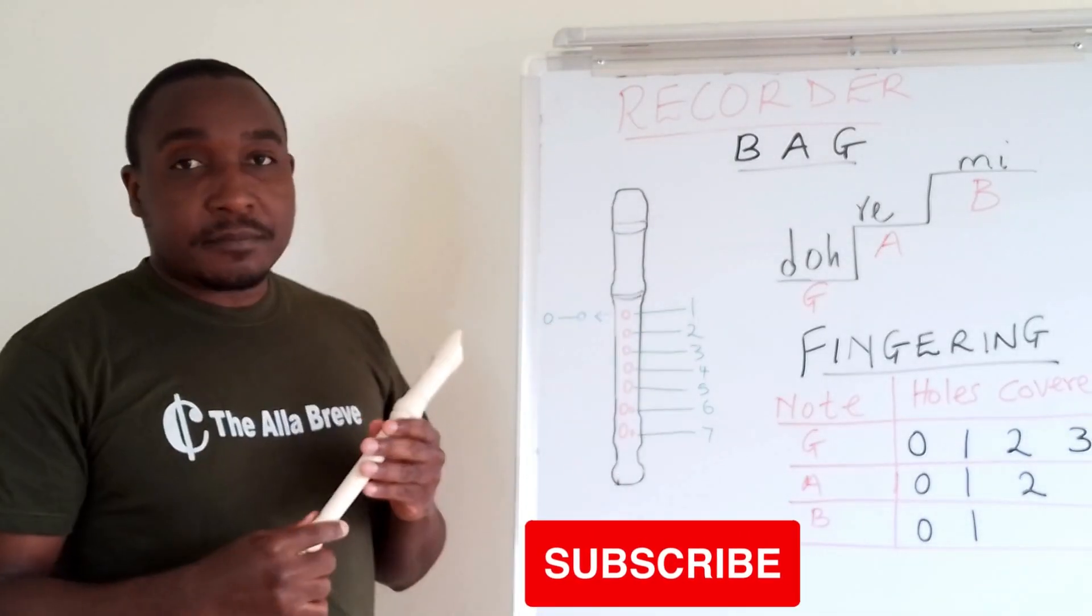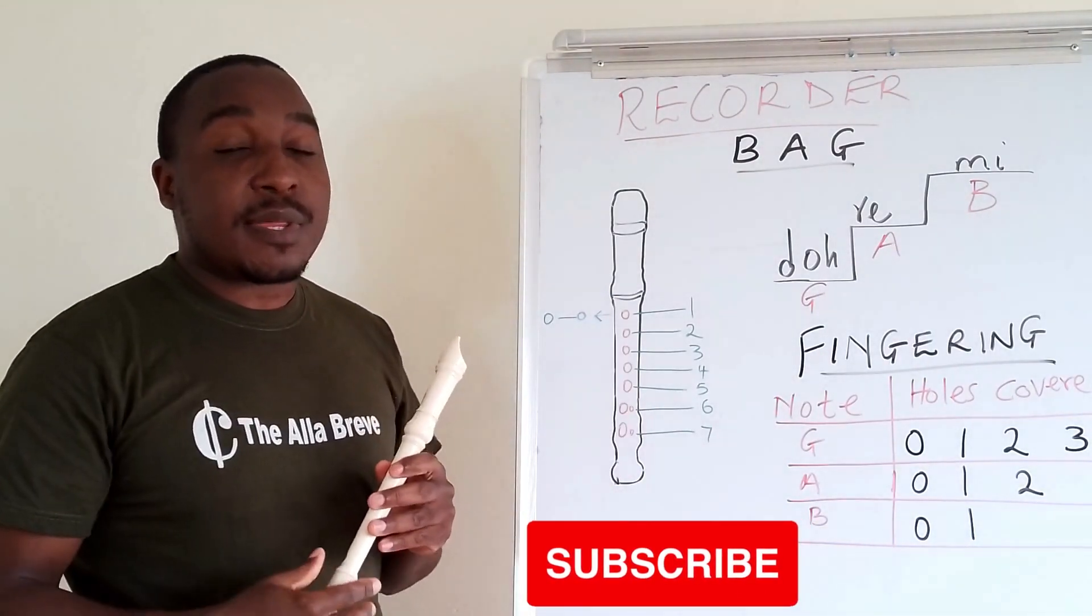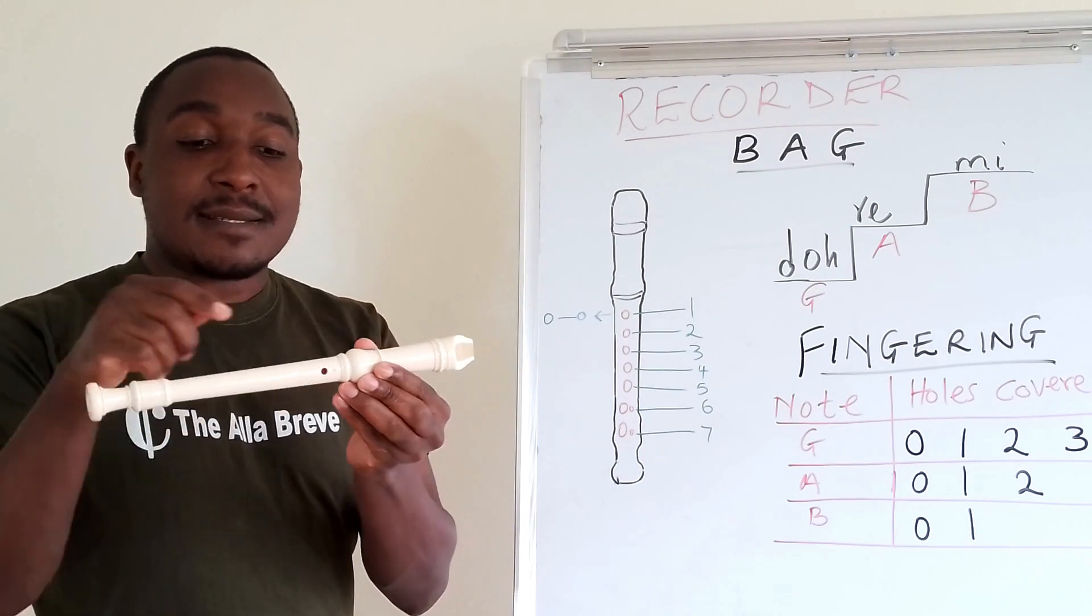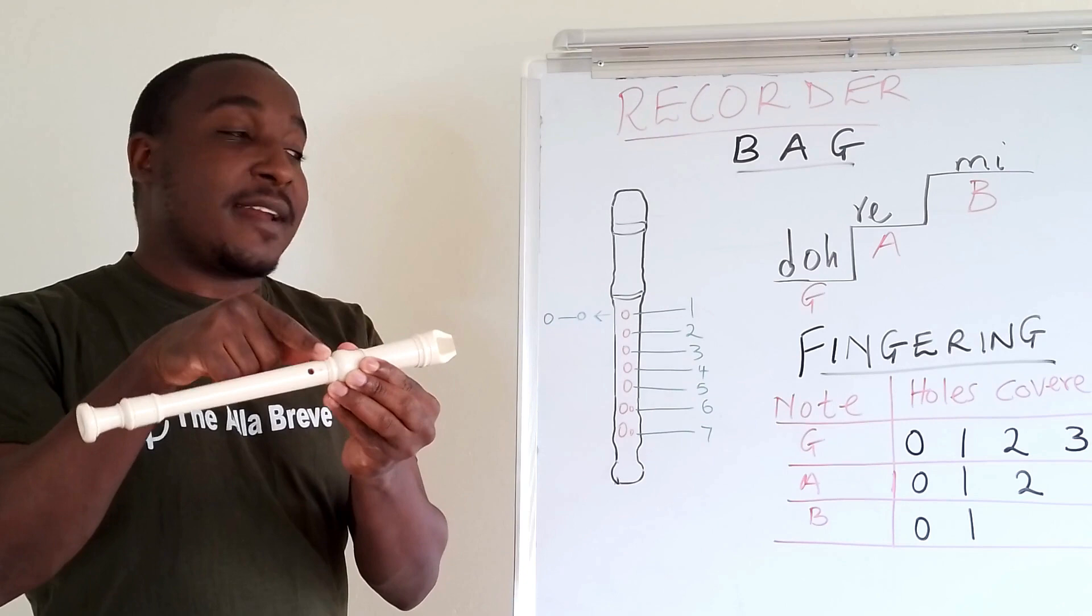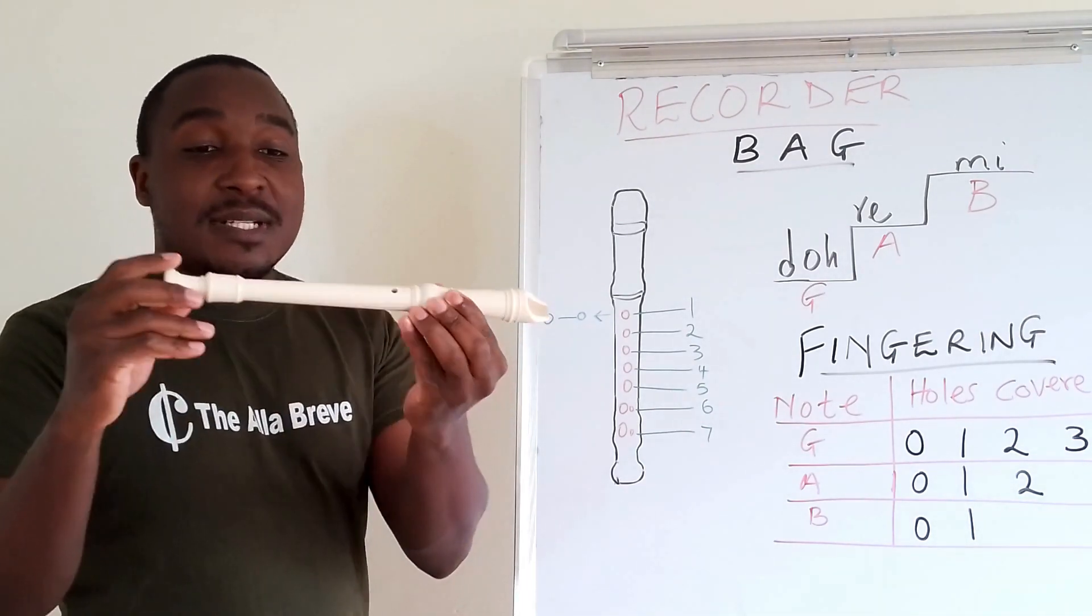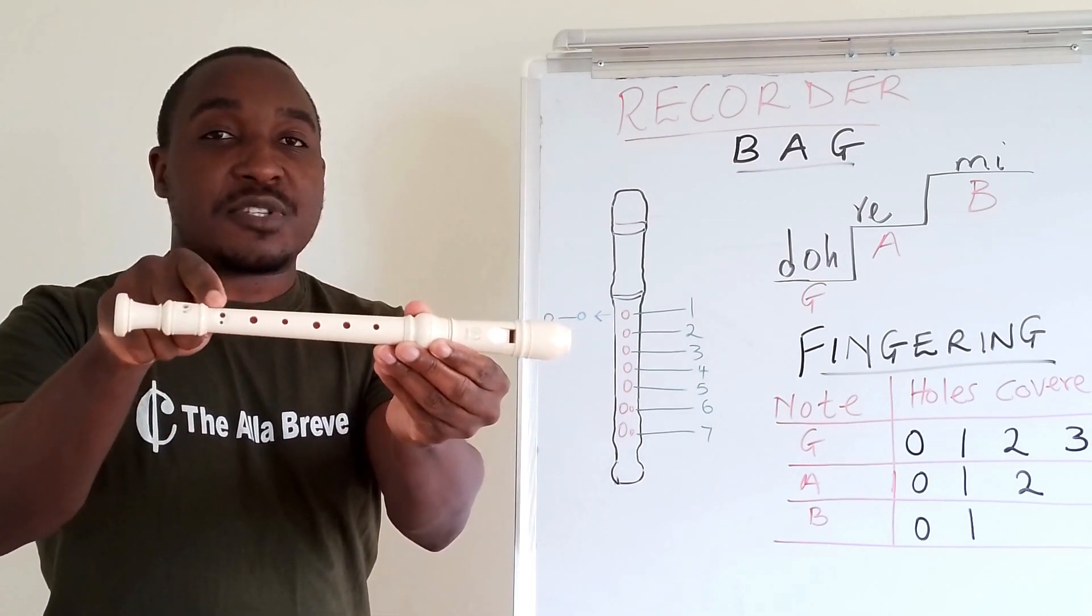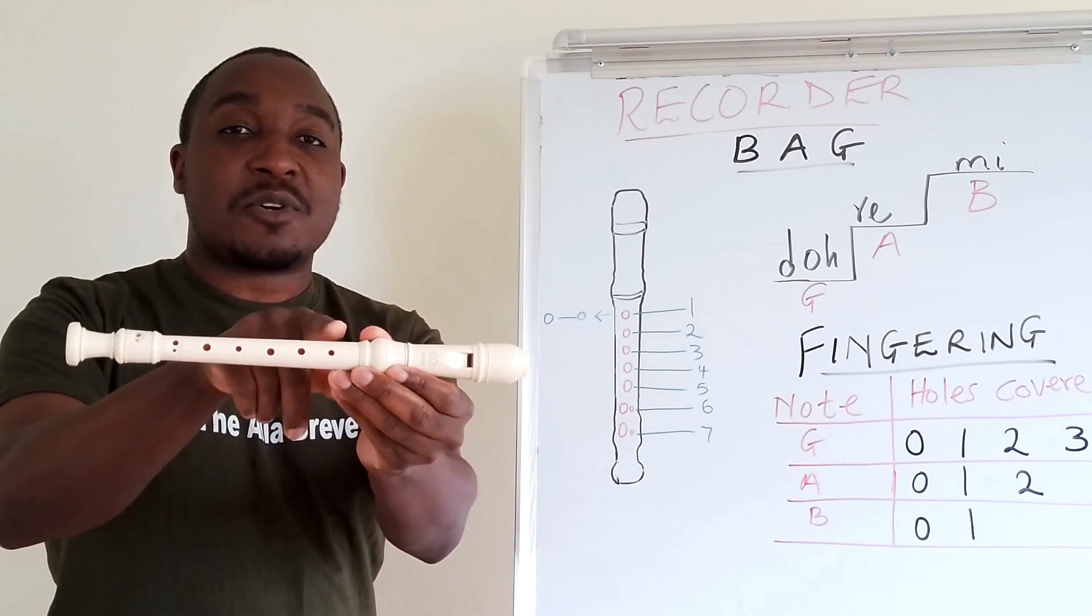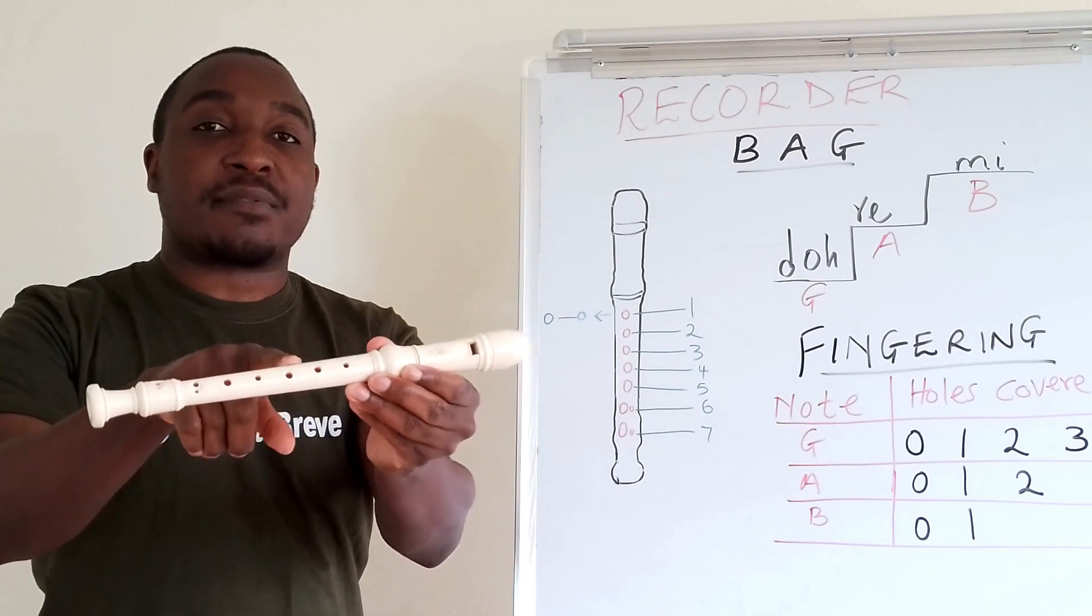Here is a diagram. In the diagram, I have used numbers to indicate the holes on the Descant Recorder. For instance, the hole at the back, I have given it number 0. When you turn from the back to this side, there are a range of holes. The hole opposite to hole number 0 is 1, then followed by number 2, followed by number 3.